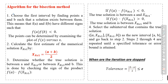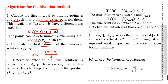Algorithm for the bisection method: Step one — choose the first interval by finding points a and b such that the solution exists between them, meaning f(a) and f(b) have different signs such that f(a) · f(b) < 0. The points can be determined by examining the plot of f(x) versus x. Step two — calculate the first estimate of the numerical solution. Step three — determine whether the true solution is between a and x1, or between x1 and b, by checking the sign of f(a) · f(x1).